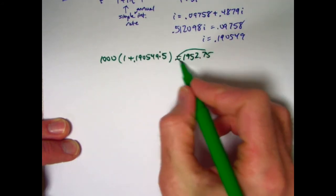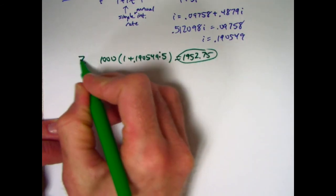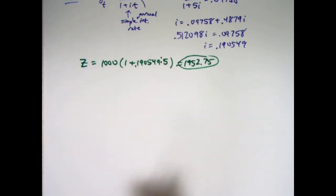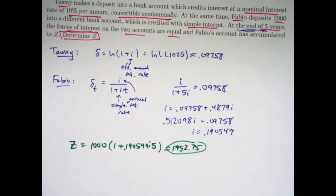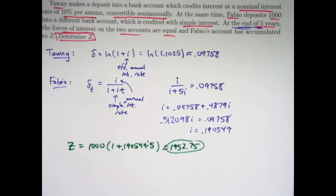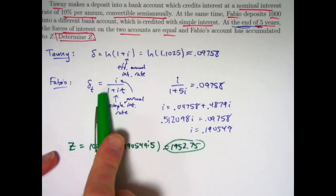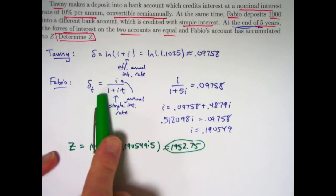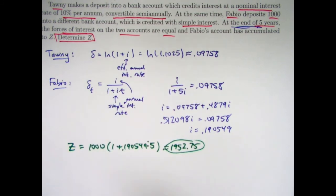That's what you get. That is the answer. That is Z. And solves the problem. Alright, well what if you forgot that in compound interest the force of interest is constant? You really definitely should not forget that. But what if you've forgotten the formula for the force of interest when you have simple interest?